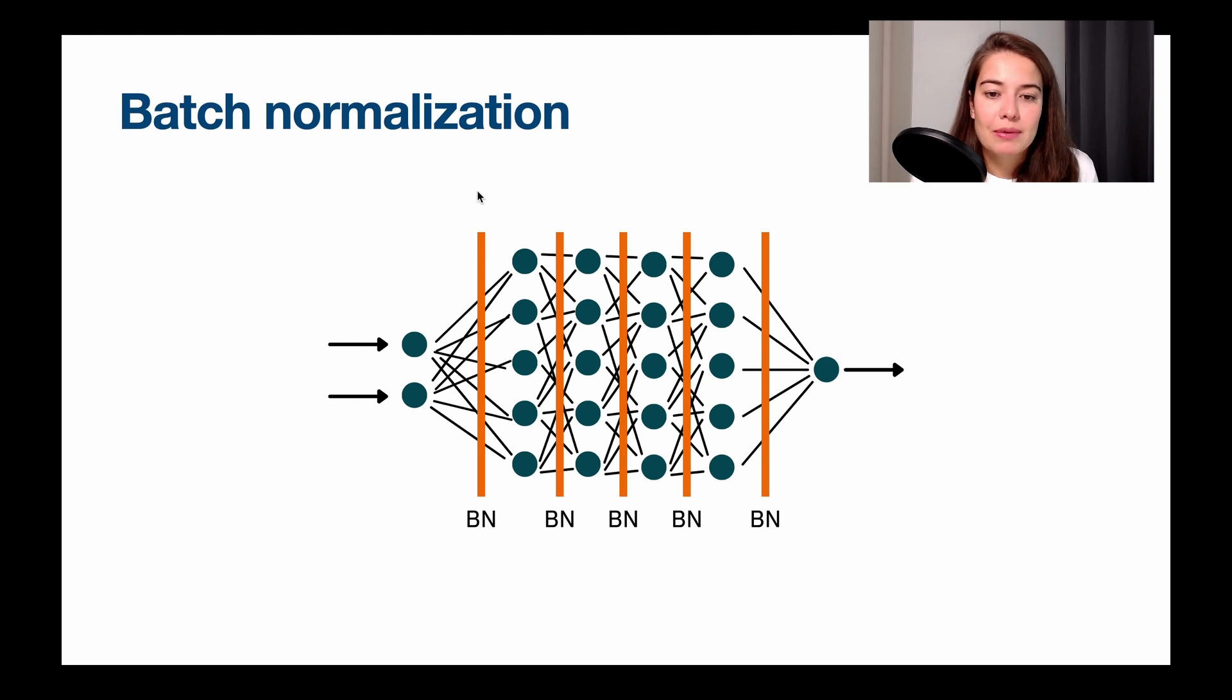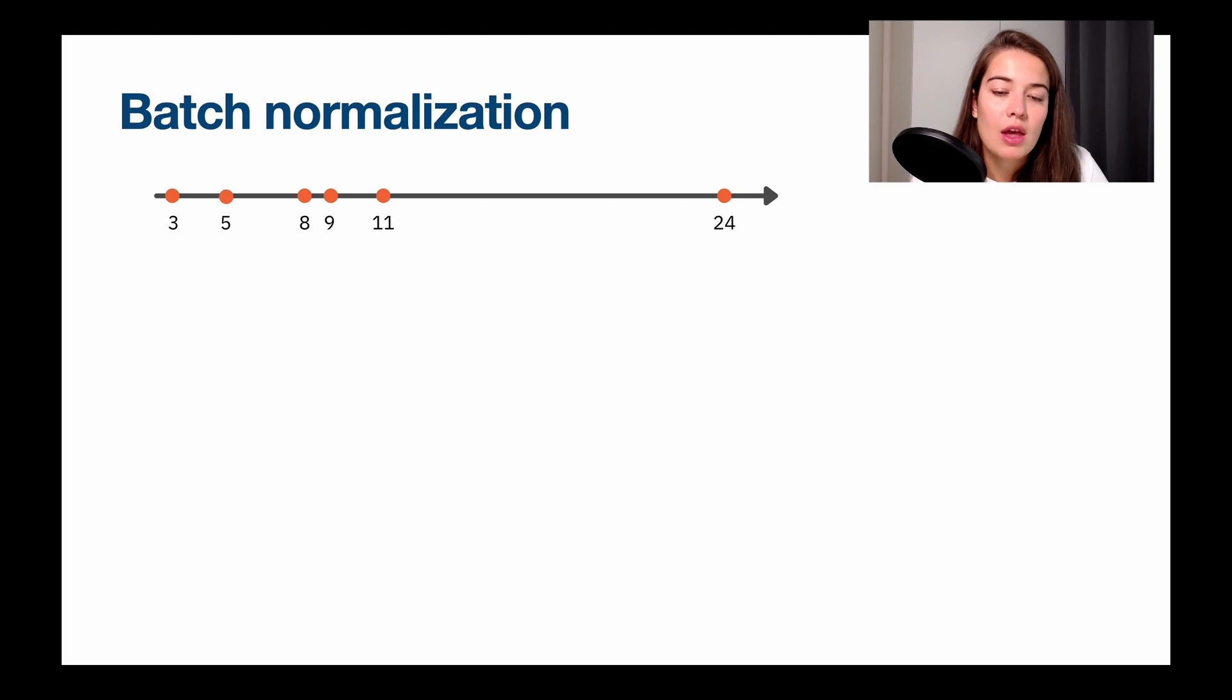And basically, what happens is we have some extra layer that will look like extra layers in between the hidden layers of our network. So whatever this little neuron outputs, we first normalize it, and then we pass it on to the next layer. So let's see how it will work.